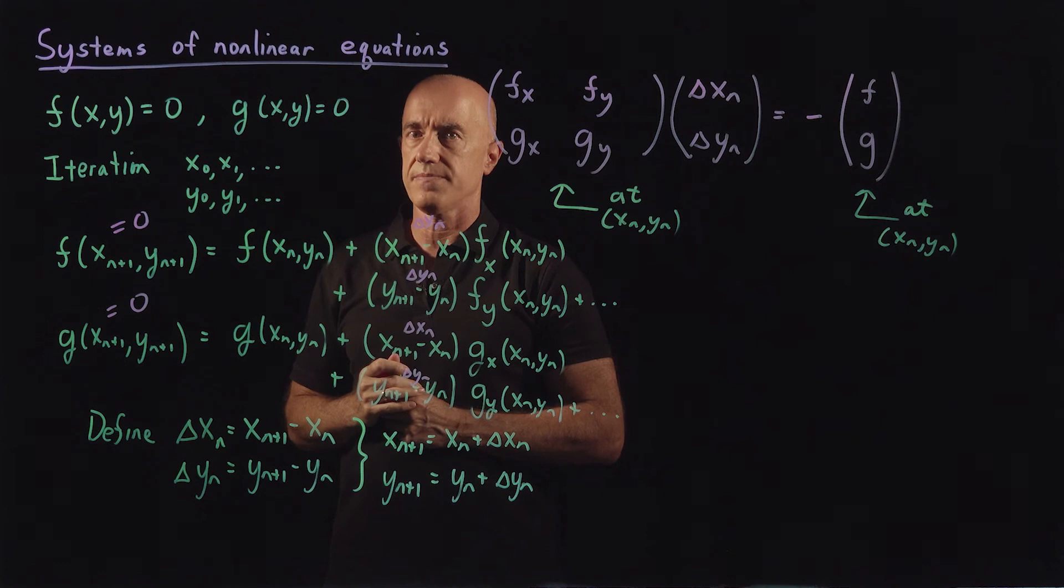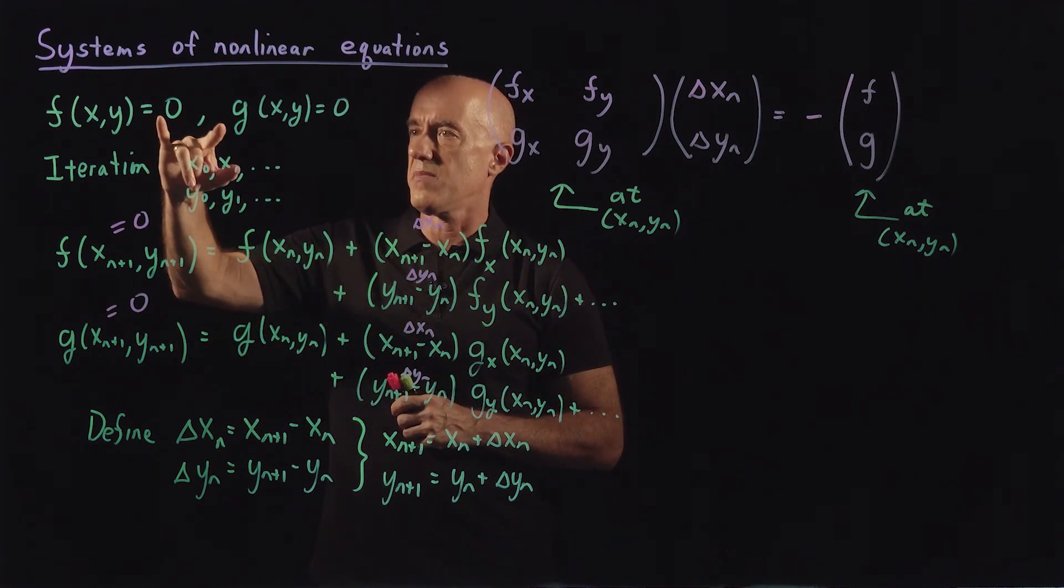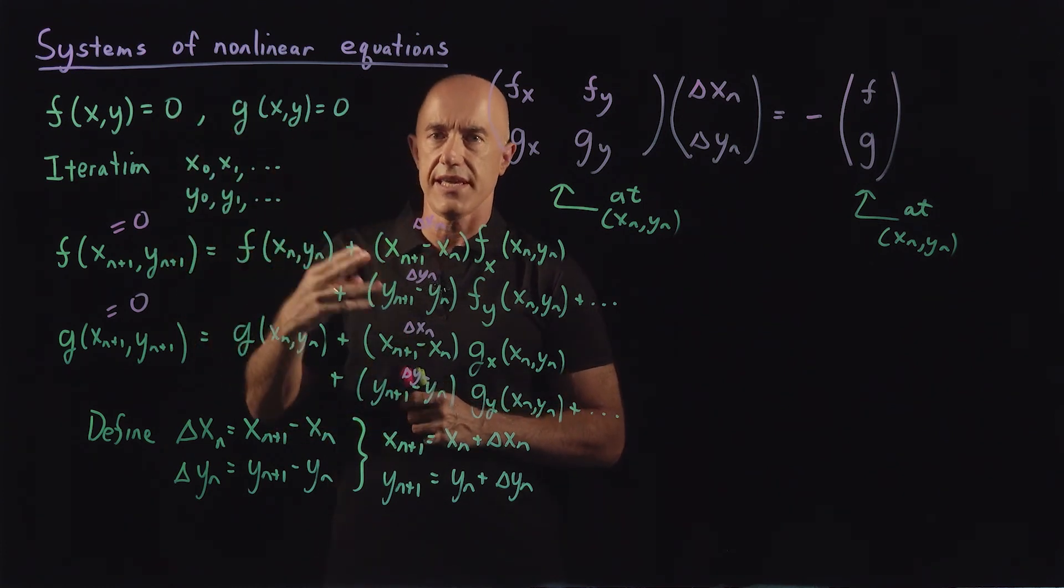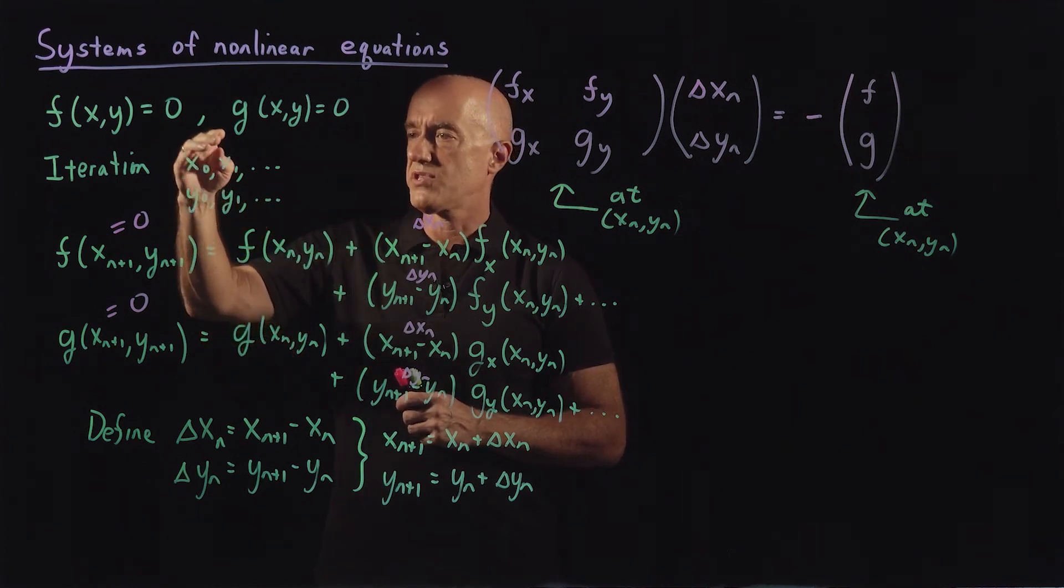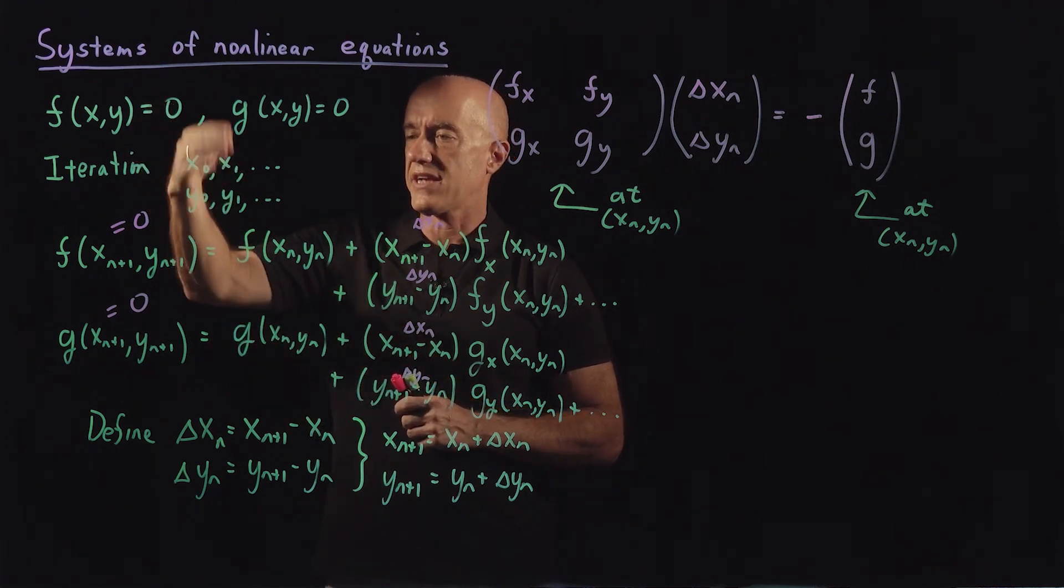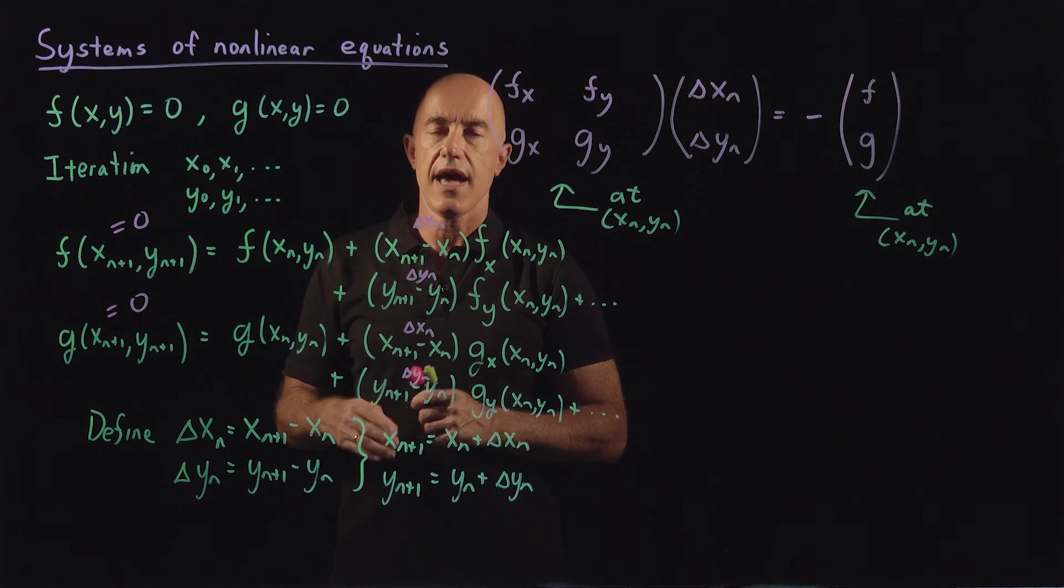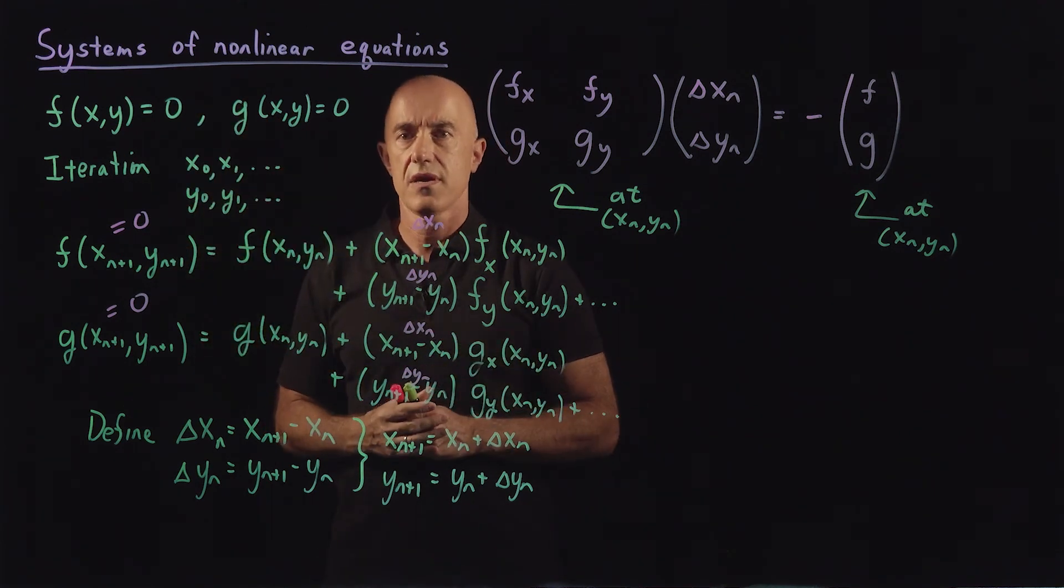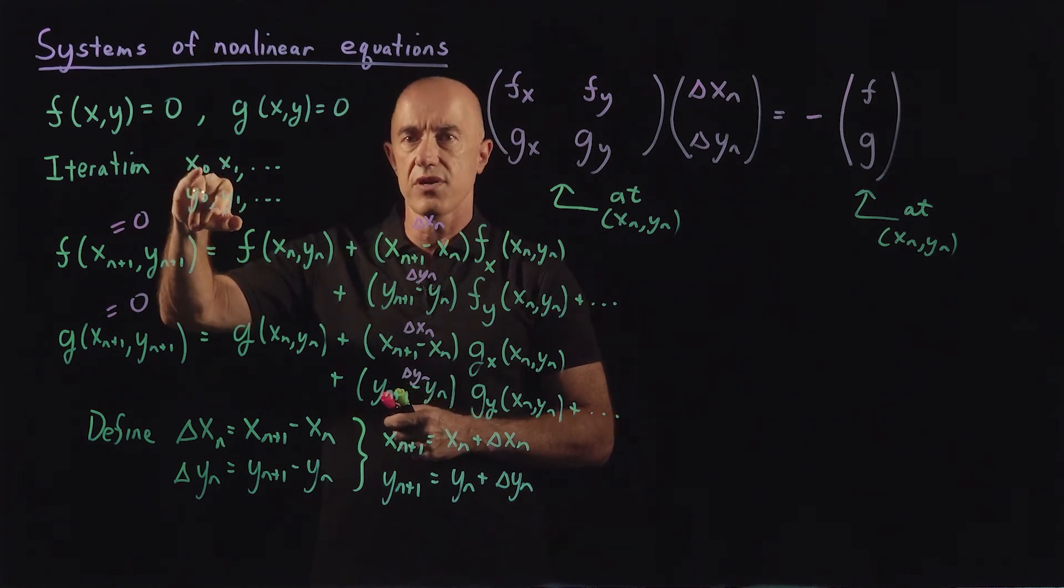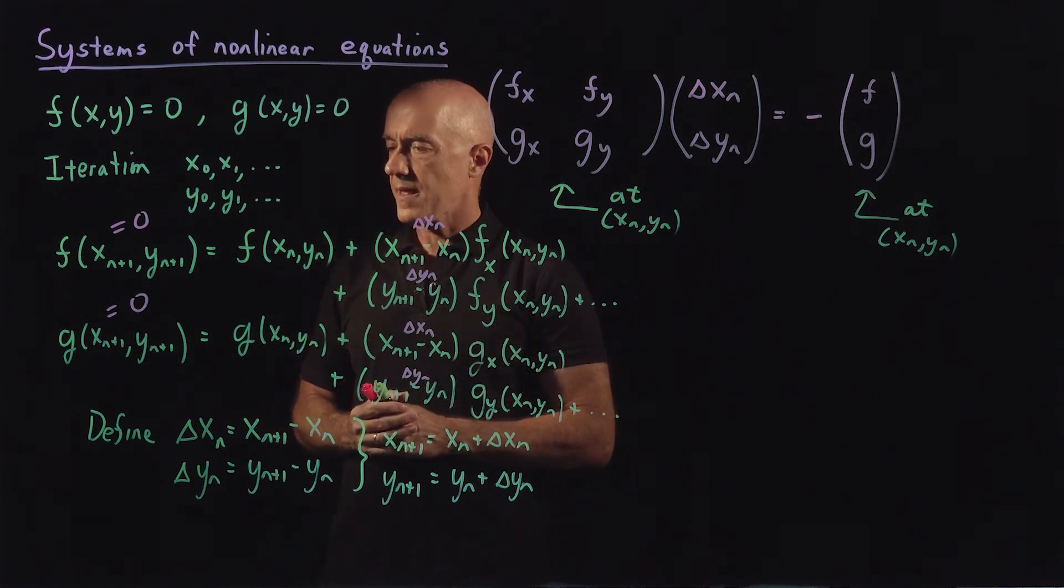We're solving this using Newton's method applied to a system of two nonlinear equations. We're looking for an iteration scheme. So we compute, we start with x naught, y naught as our initial guess. Then we compute x1, y1. Then we compute x2, y2. And we hope that it converges to a root. So provided that we start close enough to a root in our initial guess, it will converge to the closest root.